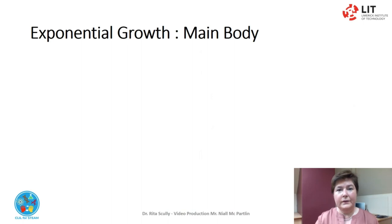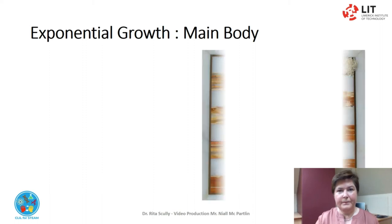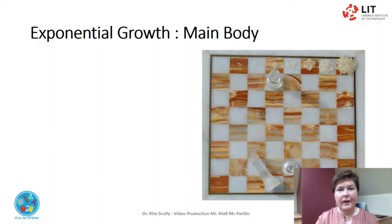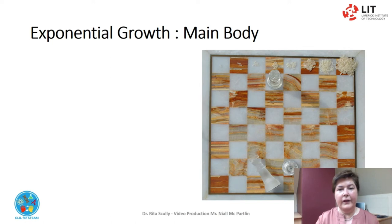Another example that is often used is rice on a chess board. On the first square, one grain of rice is placed. Then its current value is doubled, so 2 grains of rice on the second square. Its current value is doubled again — 4 grains of rice on the third square.